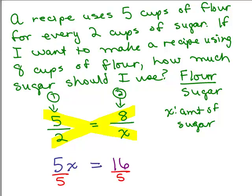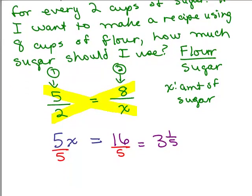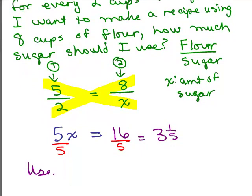So our answer will be 16 fifths, which is 3 and 1 fifths. So how much sugar do I need? Use 3 and 1 fifths cups of sugar.